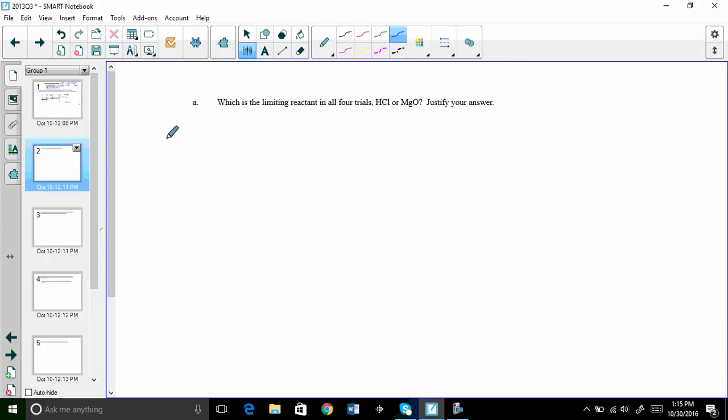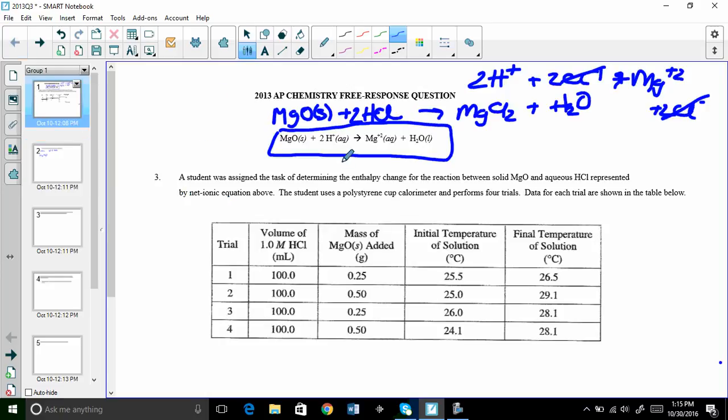Basically they're telling you just pick one. And you know me, I like trial one. So what we have in trial one is 100 milliliters of 1.0 molar HCl and we also have 0.25 grams of MgO. So the question is what is the limiting reactant? We have 1 molar HCl, 100 milliliters, and 0.25 grams. Notice the one to two mole ratio.